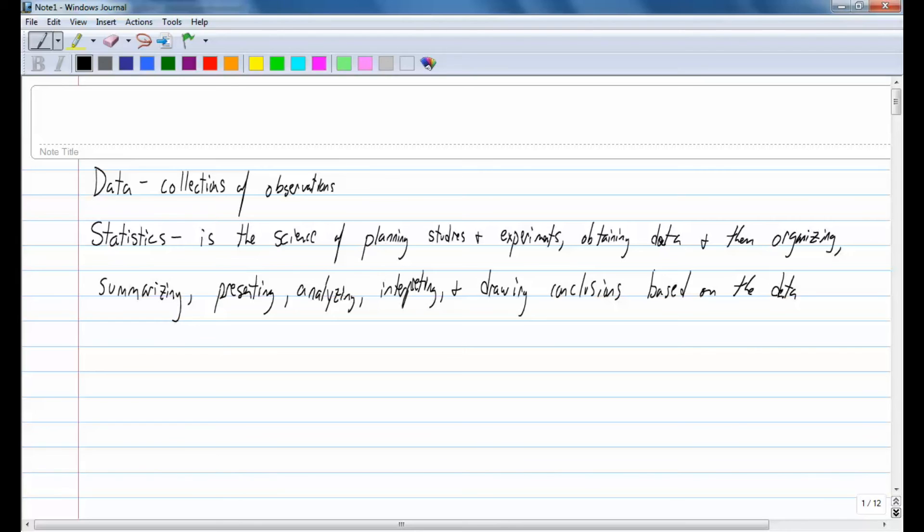Whenever we collect data, sometimes data is collected from a population, sometimes it's collected from a sample. So, there is a difference. Population is going to be the complete collection of all individuals to be studied. So, let's say that my study was on U.S. Senators. Then the population would be the collection of all of the U.S. Senators.